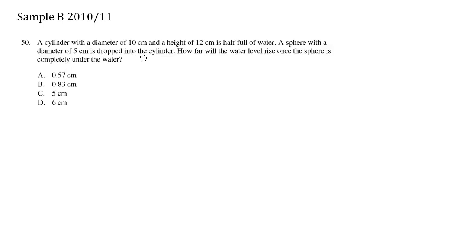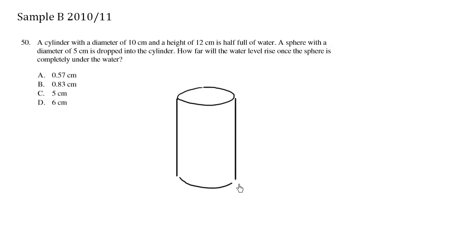A cylinder with a diameter of 10 centimeters and a height of 12 centimeters is half full of water. Let's sketch this here. We have a nice cylinder. The diameter all the way across is 10 centimeters, which means the radius is half of 10, which is 5 centimeters. The height from top to bottom is 12 centimeters.